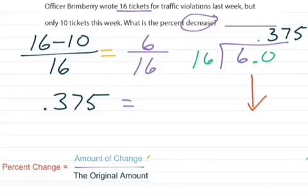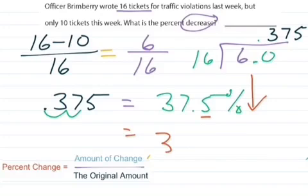Remember we can turn this into a percent here. One, two spaces. I can get 37.5%. That would work. Or that 5 right there, we could round it up to 38% decrease when we solve. So either 37.5% or 38% decrease here in the amount of traffic violations.